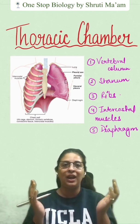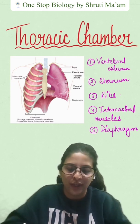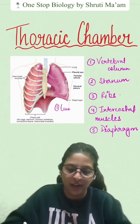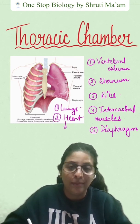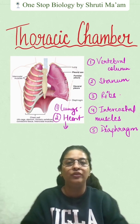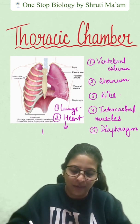In the thoracic cavity we have two major organs. One is the lungs, which are in a pair, and the second one is the heart. When we talk about the position of the heart, it is known as mediastinum.